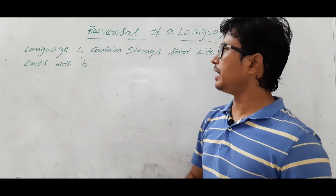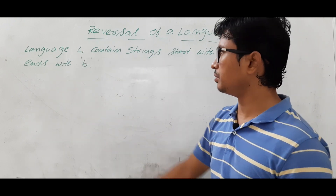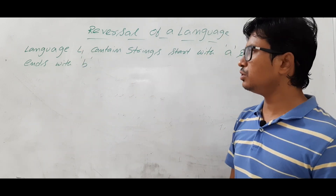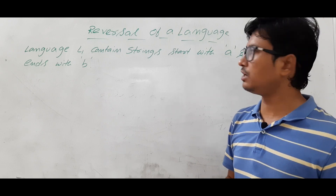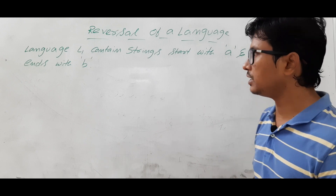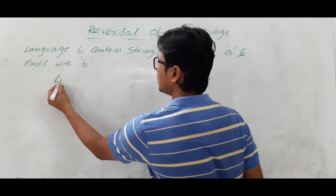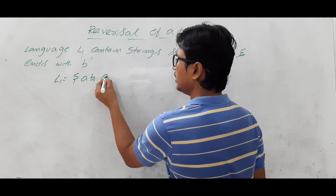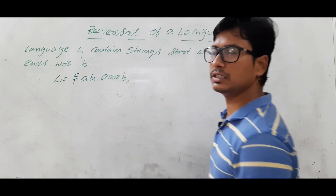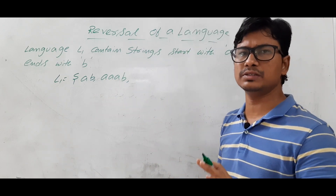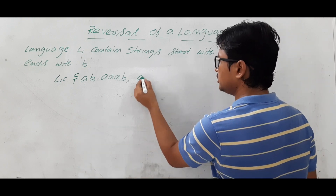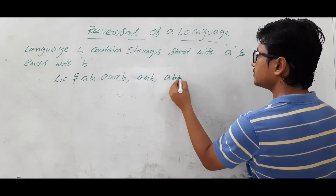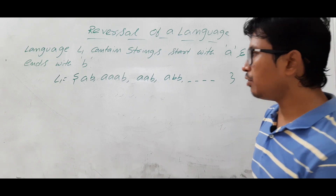Let me explain the reversal of a language with an example. Language L1 contains strings that start with A and end with B. So any string which belongs to language L1 should start with A and end with B. L1 consists of strings like AB, AAB, AAAB — there is no restriction on the number of A's or B's, and no restriction on the length. It is an infinite language.